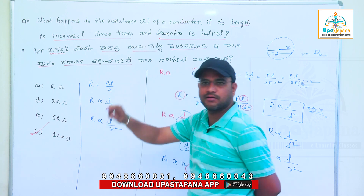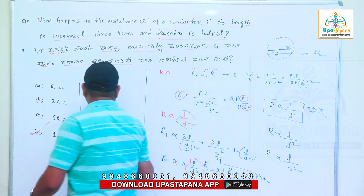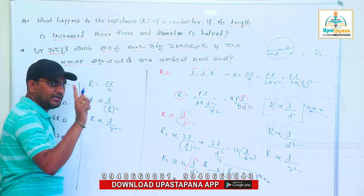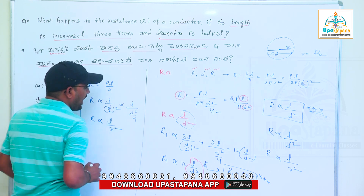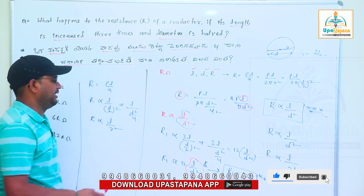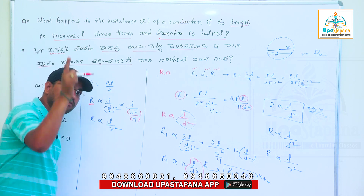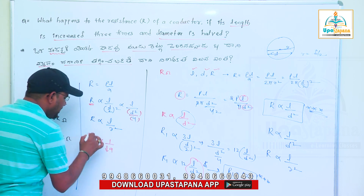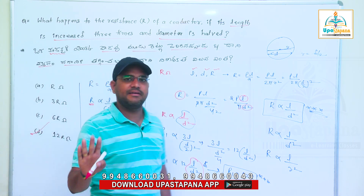The diameter is substituted the same way. Using D by 2 all squared in the denominator, giving L divided by D squared by 4. The calculation confirms the diameter factor of 4.